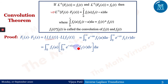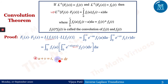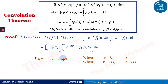We apply the substitution u + v = t, so dv = dt. For the limits: when v = 0, t = u; and when v goes to infinity, t also goes to infinity, since we have the addition. So t is simply another variable depending on u.